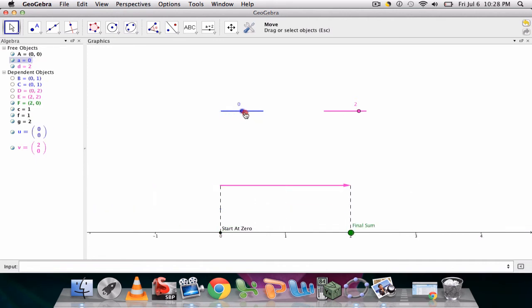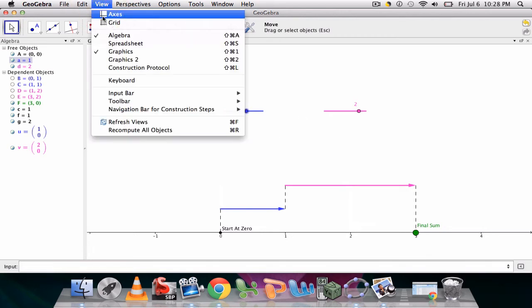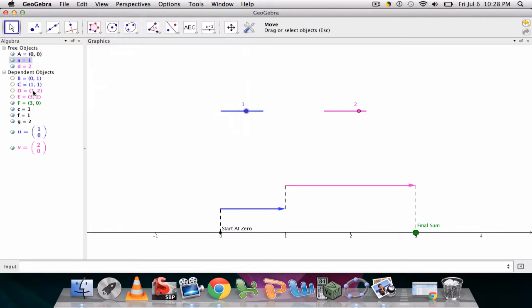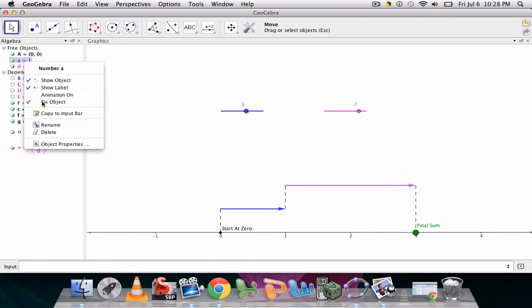And then you can't move it. All you can move is the dot. There's no way of moving it. So if you want to move a slider, all you need to do is make sure in View that you have the algebra selected. Then in the algebra view that's over here, right-click on your slider and you uncheck fixed object.